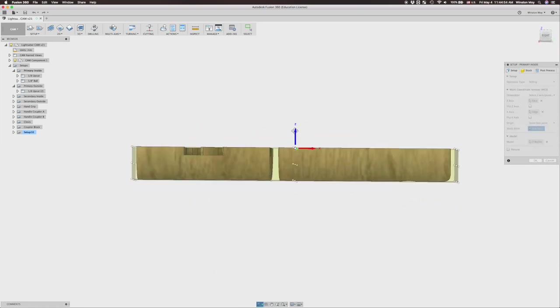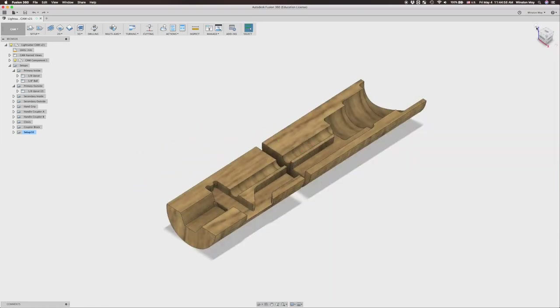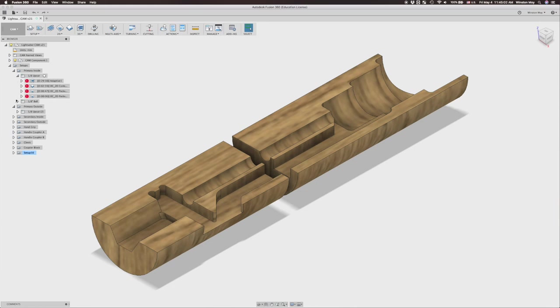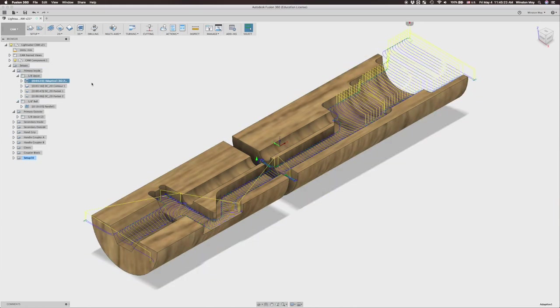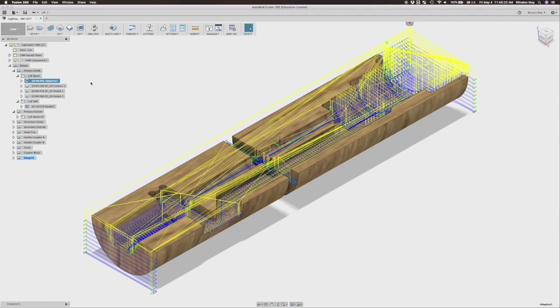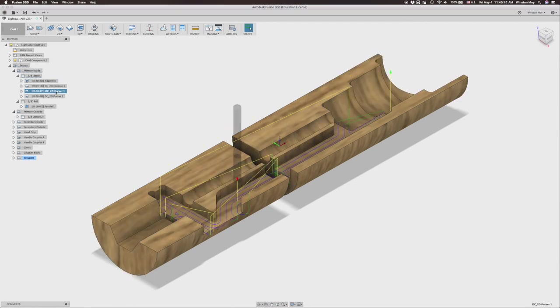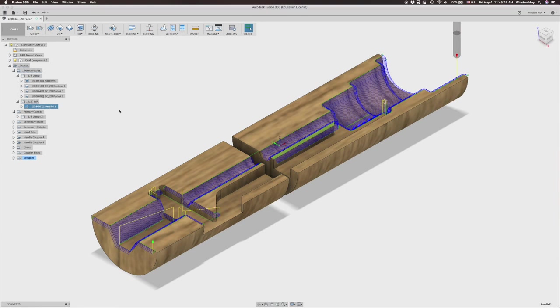The first operations are to cut out the inside features of my lightsaber. This way when I flip the part over, the flat side will still be able to rest securely against my wasteboard. Using an adaptive clear, I'll knock out the majority of my stock material, then I'll come back with 2D pockets and contours to clean up any perpendicular faces, and finally I'll use a parallel toolpath to smooth out all of my sloped surfaces. I'm using a combination of a ball and flat eighth inch end mills for this.